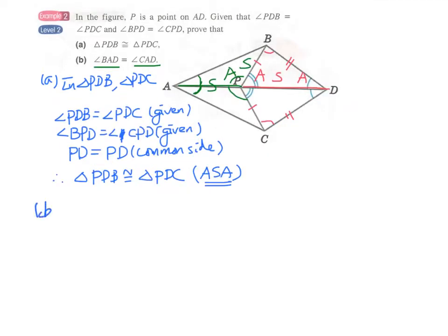And therefore, we can now write down the answer for part B. In triangle APB and triangle APC, AP equals to AP. We have a common side.